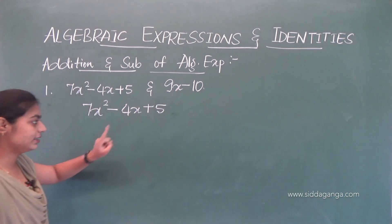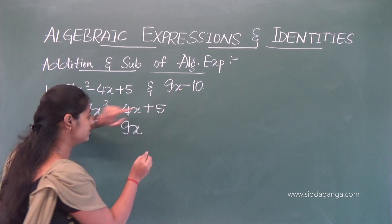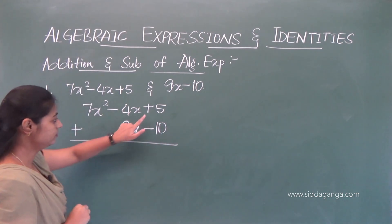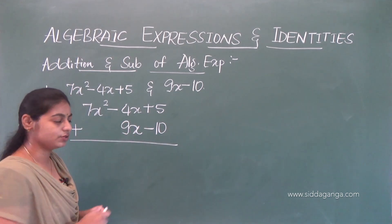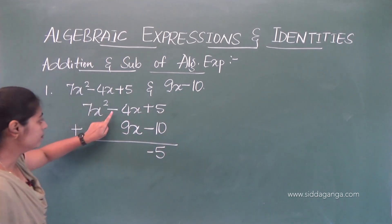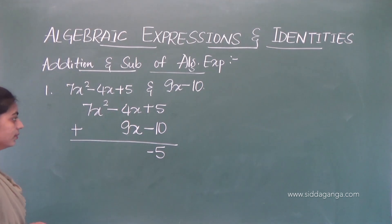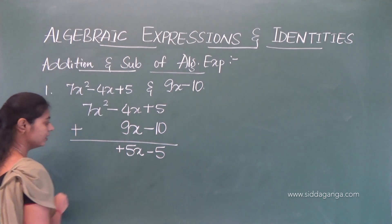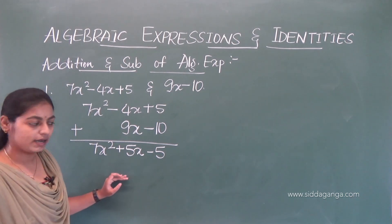Place like terms under like terms. 9x goes with minus 4x. For constant terms: plus 5 and minus 10 — one positive and one negative, so we subtract: plus 5 minus 10 equals minus 5. For x terms: minus 4x plus 9x, again one negative and one positive, so we subtract: result is plus 5x. So the answer is 7x squared plus 5x minus 5.